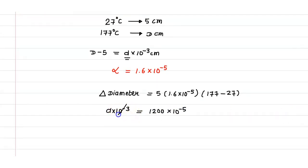Now, if we cancel the value of 10 raised to power 3 into 10 raised to power minus 5, then we will get 10 raised to power minus 2. So, the value of d is 12.